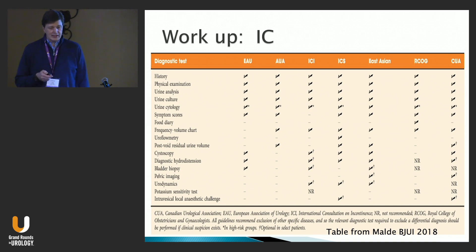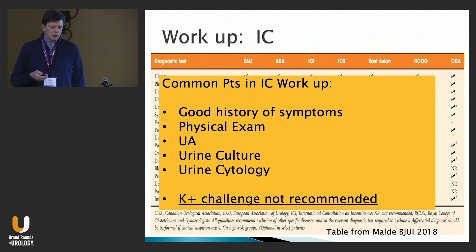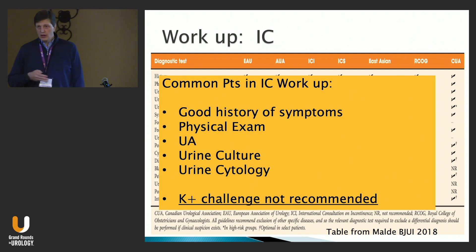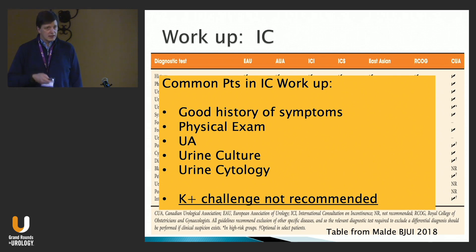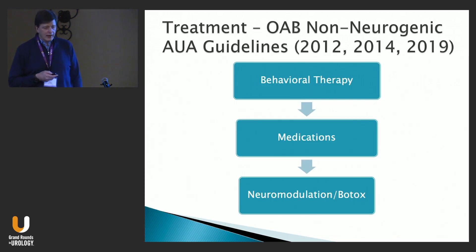For interstitial cystitis, the diagnosis is also clinical. A broad review of guideline statements summarizes: physical exam, good history, symptom review, urinalysis, and urine culture. Urine cytology is commonly mentioned in older guidelines but we're moving away from that — positive cytology is very rare in IC. Potassium challenge testing is no longer recommended for IC diagnosis. Focus the history on a constant bladder sensation and pain, differentiating from urgency or inability to delay urination.